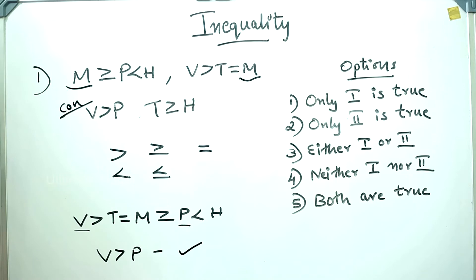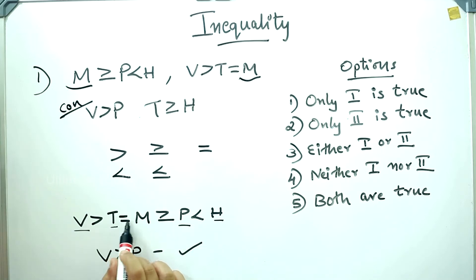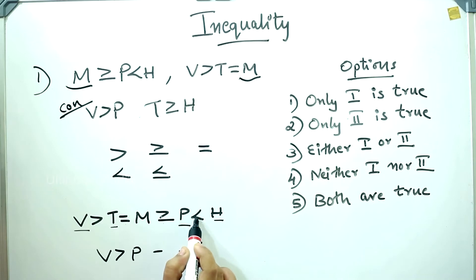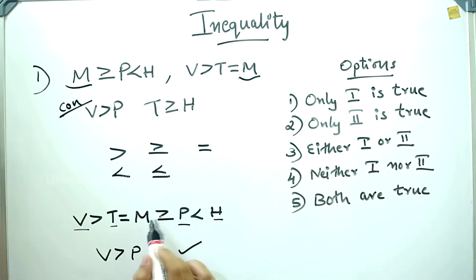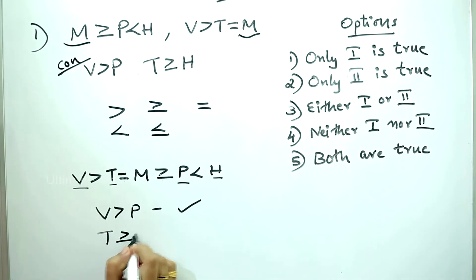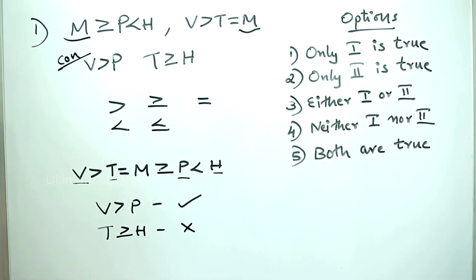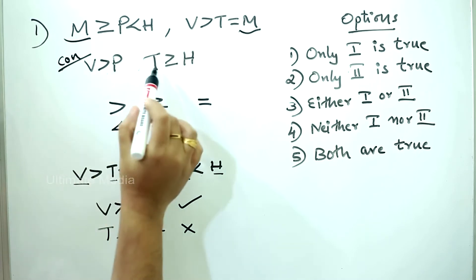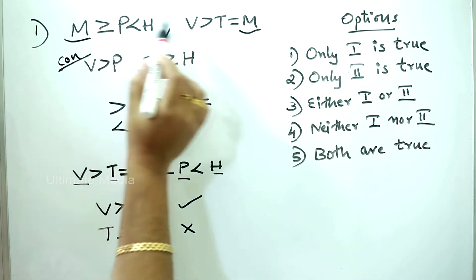Let's follow. Let's look at these two: T is greater than or equal to H. T is here and H is here. T is equal to here. Now let's look at these symbols. This is not going to be called T is greater than or equal to H — this is not going to be understood. This is V is greater than P, and this is T is greater than or equal to H.